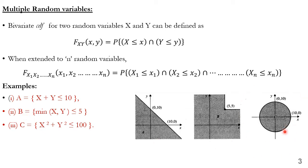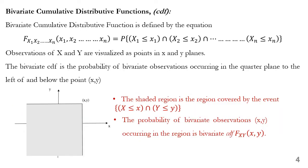The third example: we have a circle with a radius of 10. Any area inside the circle is defined as x² + y² ≤ 100. That area is defined as region C. Let us now understand how to calculate the bivariate cumulative distribution function.